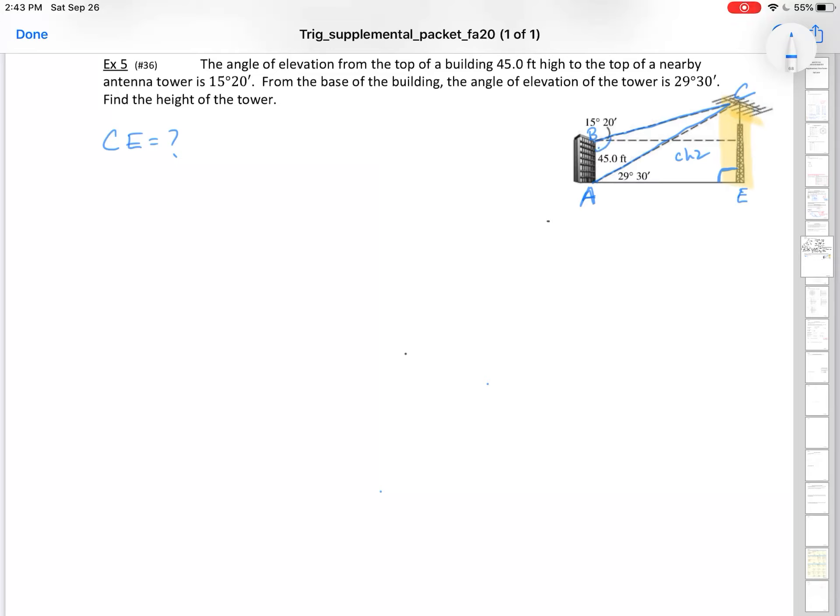Angle B, which goes from the building all the way up to that line, well, we know up to that horizontal line it's 90 degrees. So angle B is 90 degrees plus the additional 15 degrees 20 minutes. So angle B is 105 degrees 20 minutes. Awesome. And we also know this little angle right here. Angle A in that triangle is right here. What's angle A? Angle A is 90 degrees minus 29 degrees 30 minutes. And if you work that out, you'll quickly see that that's 60 degrees 30 minutes.